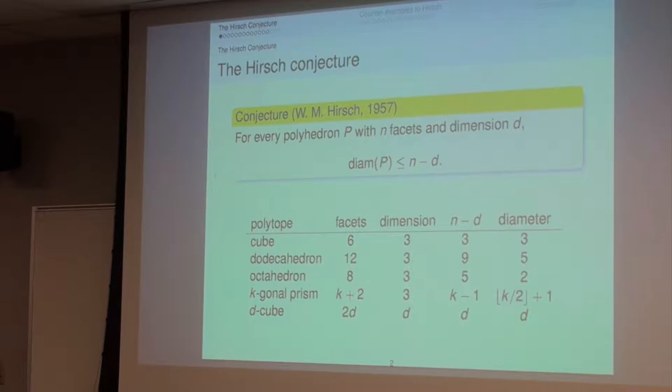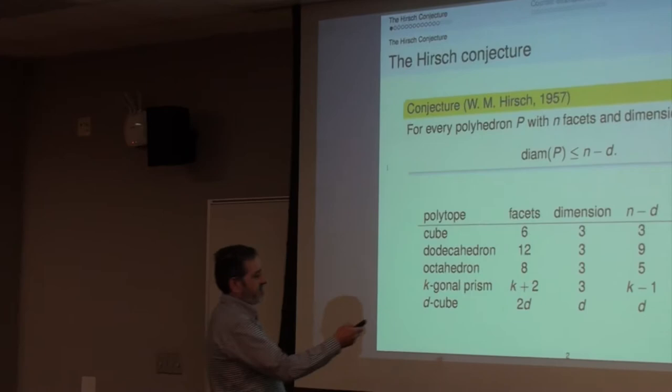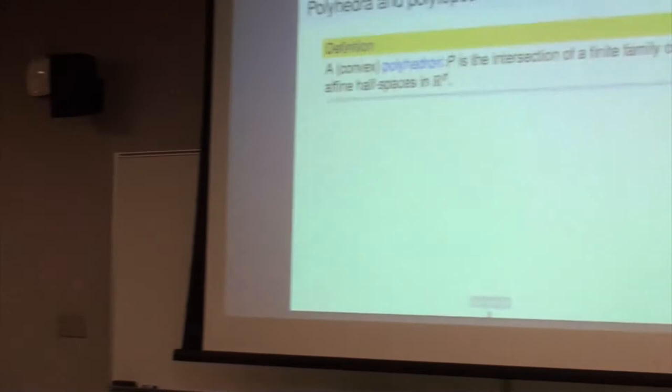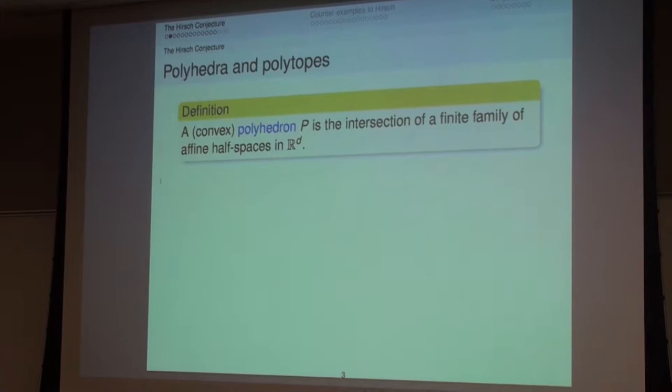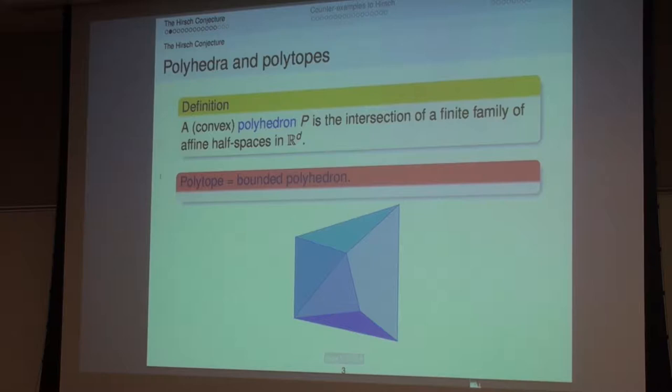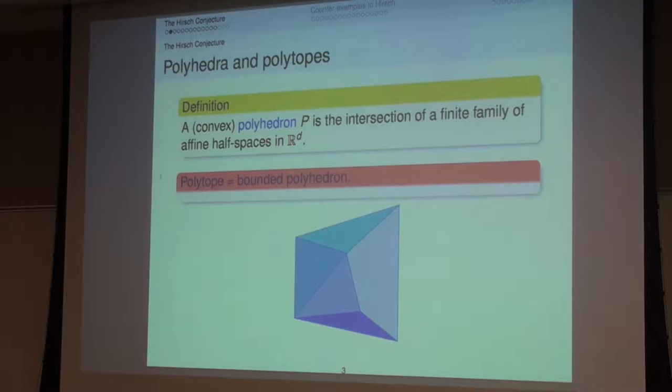The conjecture that Hirsch made is that no polyhedron violates this inequality. By a convex polyhedron, I mean the intersection of a finite family of half-spaces. I will use the word polytope very often — a polytope is just a bounded polyhedron. In geometric combinatorics, we allow polyhedra to be unbounded; they appear in linear programming, for example. The dimension of a polytope or polyhedron is the dimension of its affine hull.